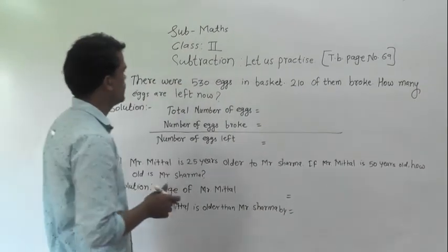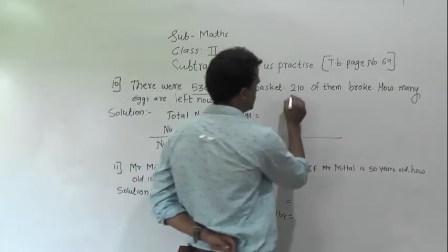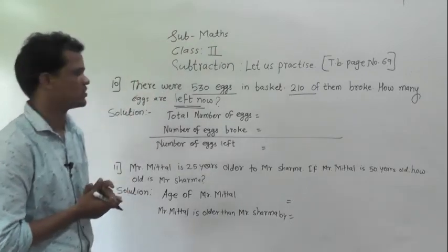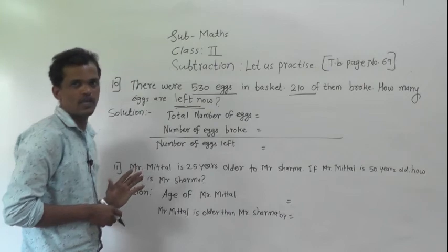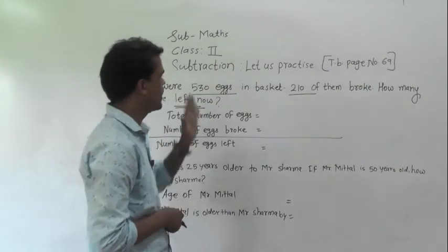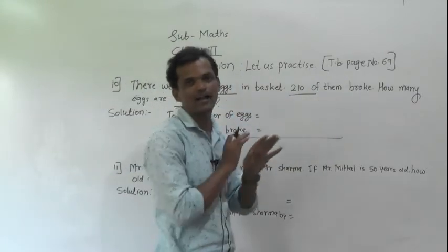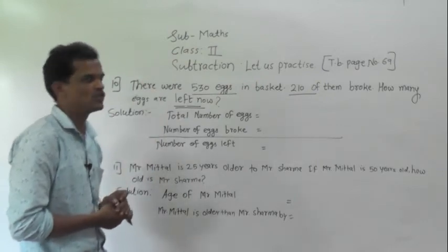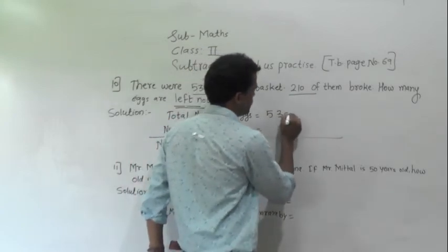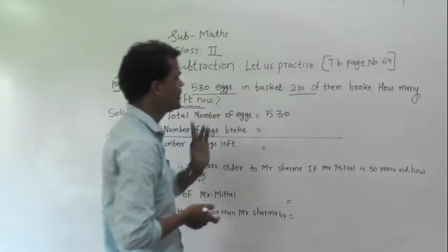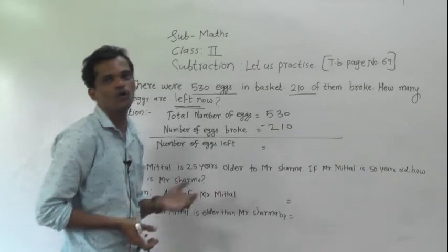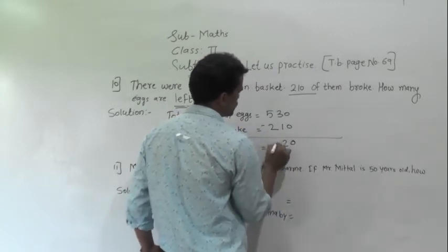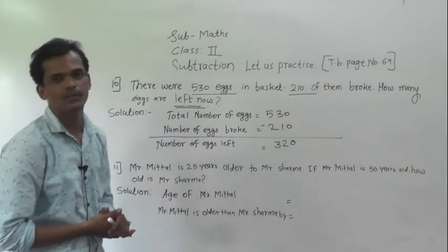Example number 10: there were 530 eggs in a basket, 210 of them broke. How many eggs are left? We need to do subtraction. Total number of eggs is 530, broken eggs are 210. Subtract: 0 minus 0 is 0, 3 minus 1 is 2, 5 minus 2 is 3. So 320 eggs are left in the basket.